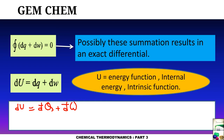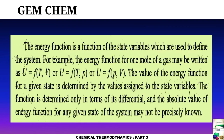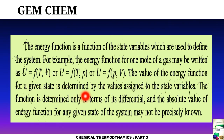Now we will see internal energy changes for different processes. The energy function U is a function of state variables that define the system. For one mole of a gas, U can be written as a function of (T, V), (T, P), or (P, V). The value of the energy function is determined by the values of the state variables P, T, and V, though the absolute value of U for any given state may not be precisely known — only changes in U can be determined.